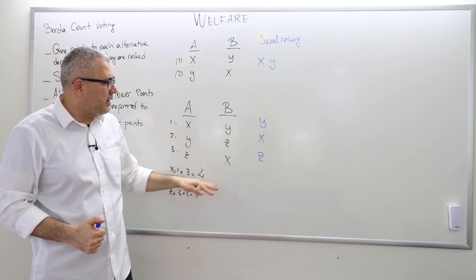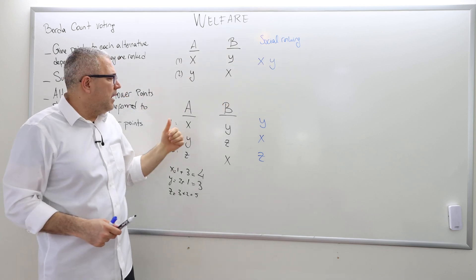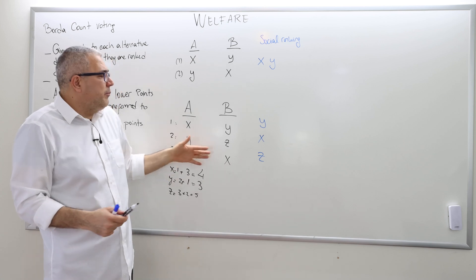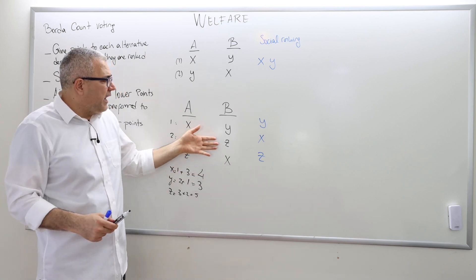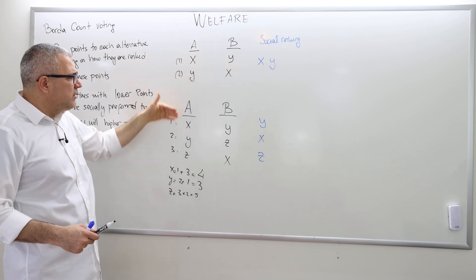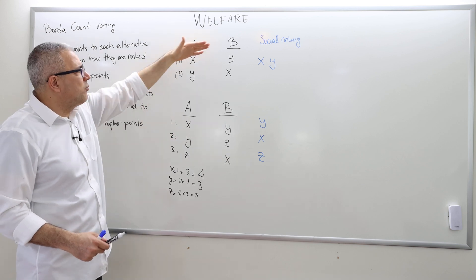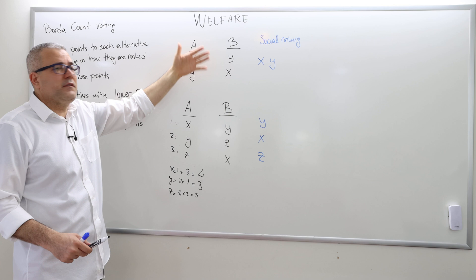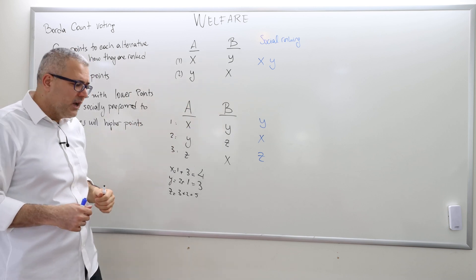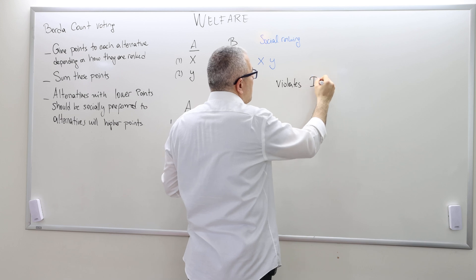So socially, Y is strictly preferred to X, and X is strictly preferred to Z. But in the previous scenario — without Z — X and Y were socially indifferent. Now, with Z present, Y is strictly preferred to X, even though neither agent changed their ranking between X and Y. Alternative Z, which is irrelevant to the X-Y comparison, has changed the social ranking between them.